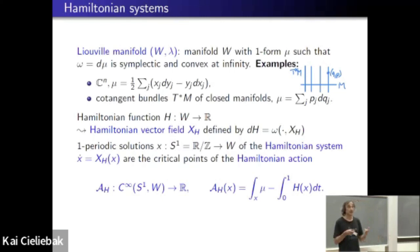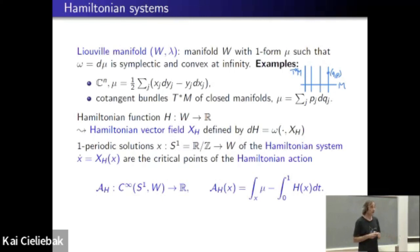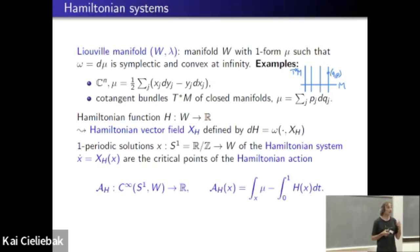One thing we're particularly interested in is periodic orbits of this Hamiltonian vector field. To find periodic orbits of given period, say period one, we define the loop space of smooth maps from the circle R/Z into W. On that loop space, we write down the Hamiltonian action functional going back to Lagrange: the integral of μ over the loop minus the average of the Hamiltonian over the loop. Critical points of that functional are precisely solutions of the Hamiltonian system, and they're one-periodic because that's built into the setup.